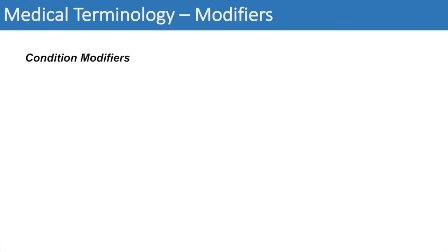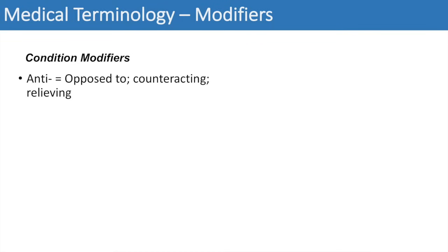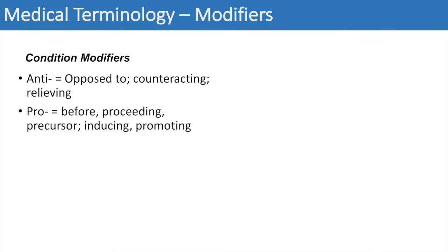To begin, we're going to look at some condition modifiers. The first one is 'anti,' which means opposed to, counteracting, and relieving. You can think of antibodies or anti-inflammatory — something that is relieving or counteracting another process. The next one is 'pro,' which means before, proceeding, or precursor, but it also means inducing or promoting. For example, progenitor cells, or pro-inflammatory — something that's causing or inducing inflammation.